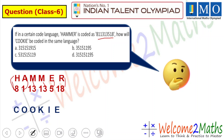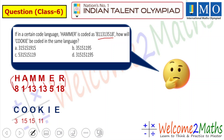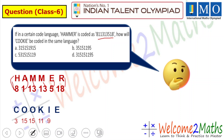C is the 3rd letter in our English alphabet, so we write 3. O is the 15th letter, so we write 15. Again O, so again 15. K is the 11th letter, so we write 11. I is the 9th letter, so we write 9. And E is the 5th letter, so we write 5. This is our answer.